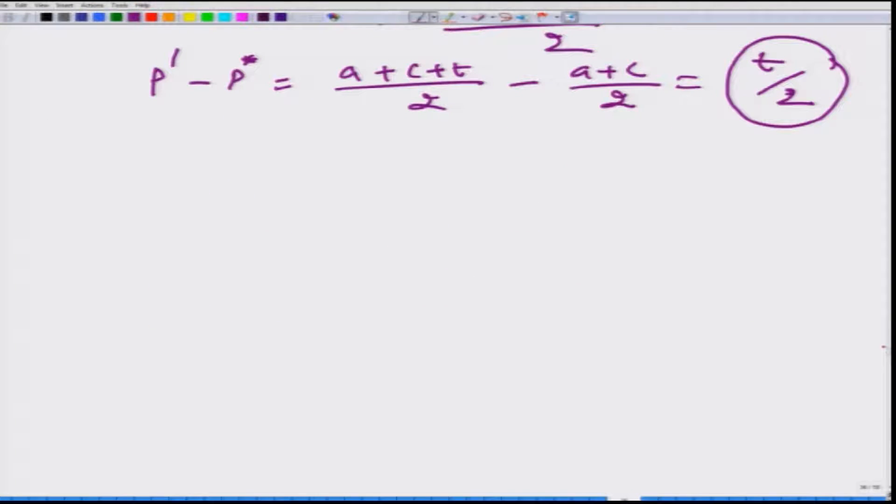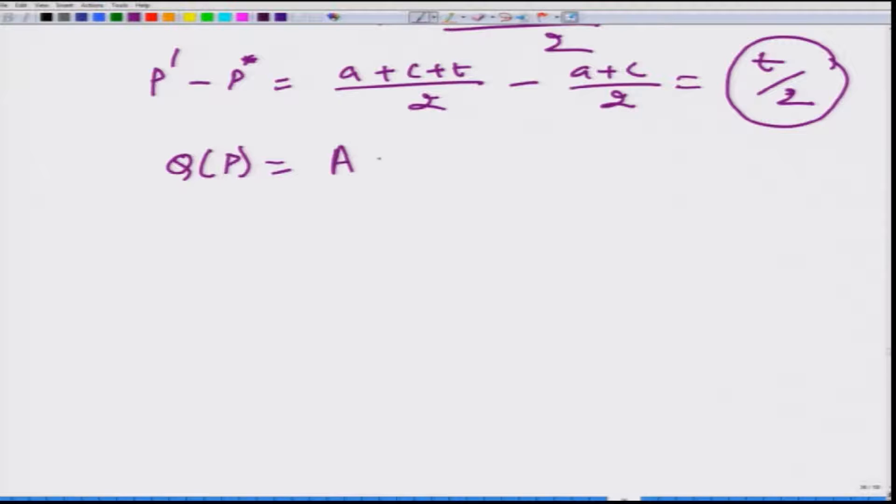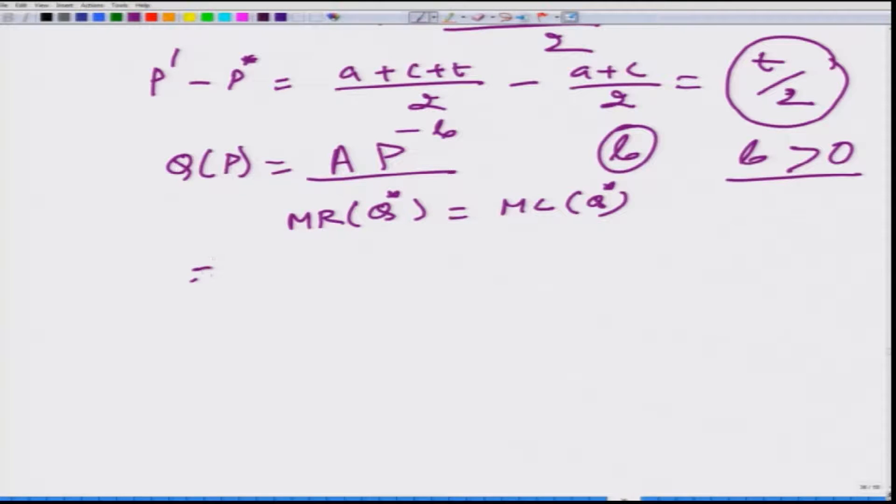Is it always the case, or is it because we have used a linear demand function? Let us take a slightly different case. Instead of taking the linear demand function, let us say that demand function has constant elasticity everywhere. This kind of demand function is given as Q = aP^(-b) and the elasticity everywhere is b. We will assume that this b happens to be greater than 0. Rather than going through the whole process again, we know to obtain the equilibrium, what we have to do is put MR(Q*) = MC(Q*).